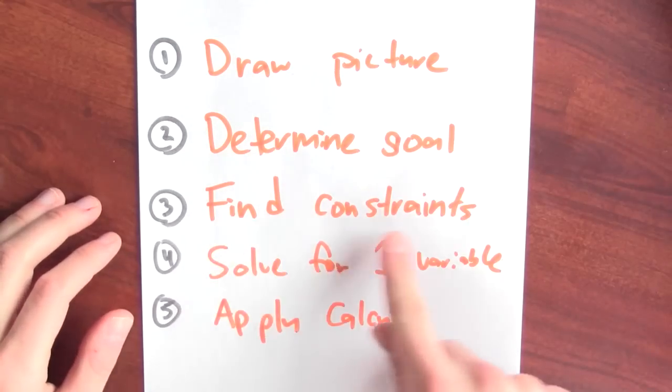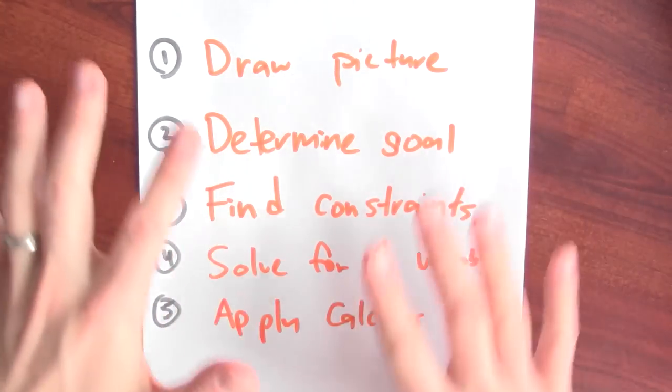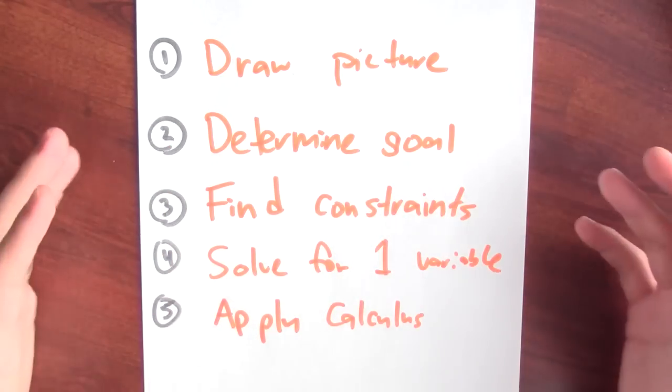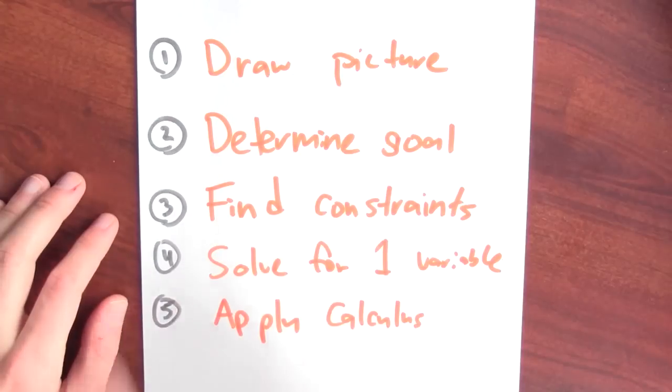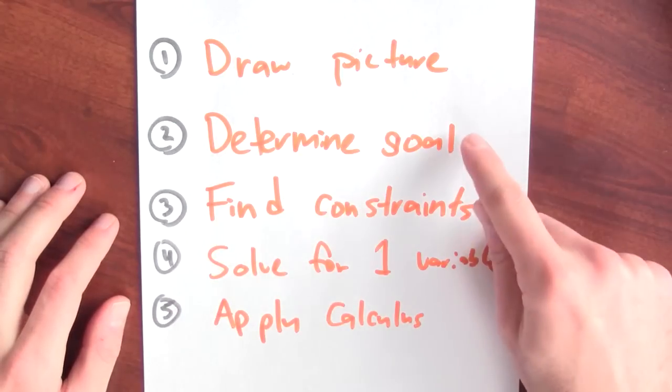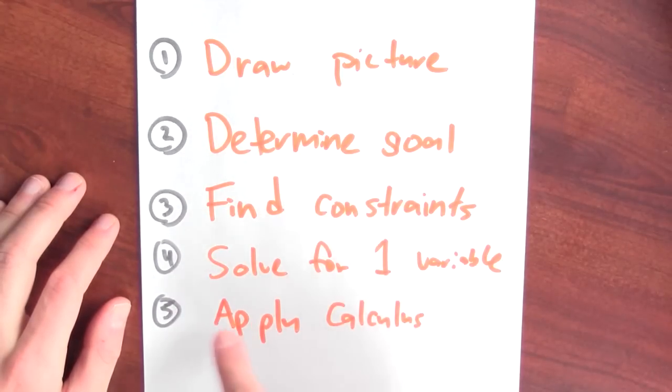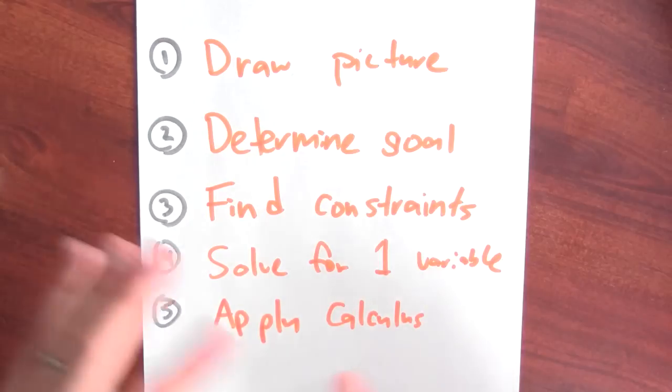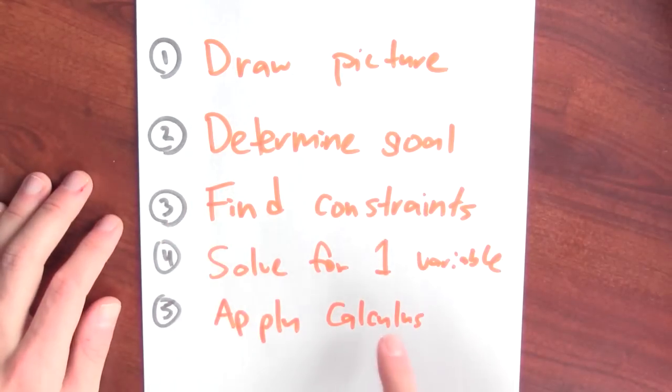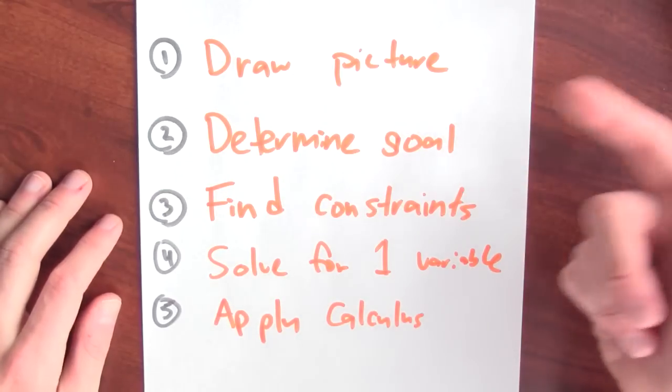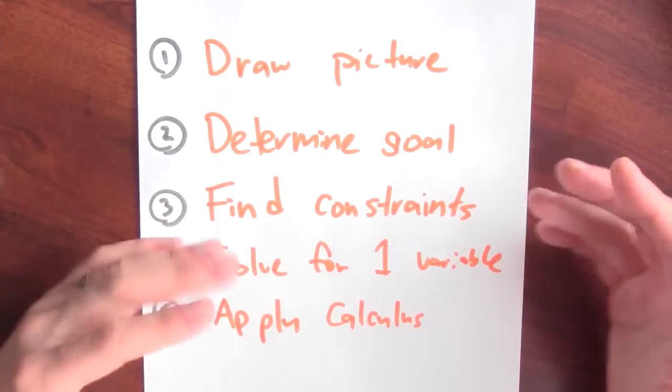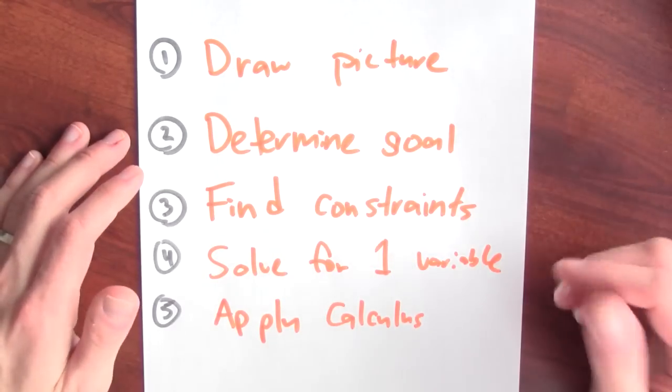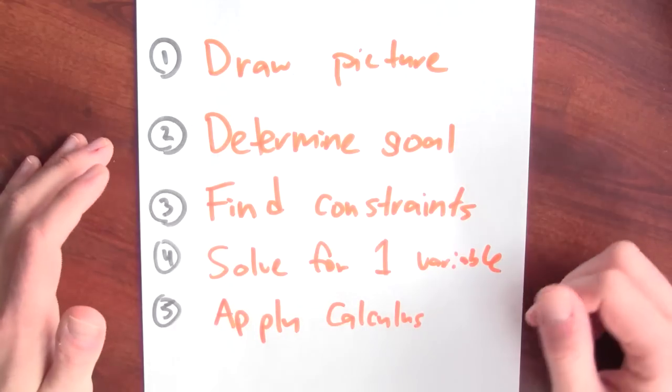With a picture in hand and everything labeled with variables, I can write down the thing I'm trying to optimize, the goal. With that, I can also write down the constraints. Not every combination of variables maybe makes sense. Might be some domain issues to consider as well. Then in step four, I'm going to solve my goal for a single variable. And once I've got a function of a single variable, I can apply calculus. This last step really means to say differentiate the function of a single variable, find the critical points, figure out where the largest and smallest values are. That's my five step process.